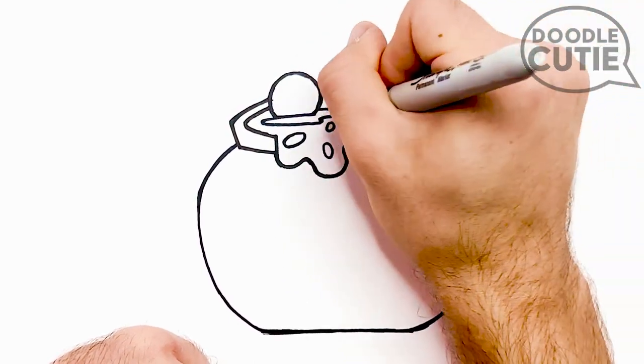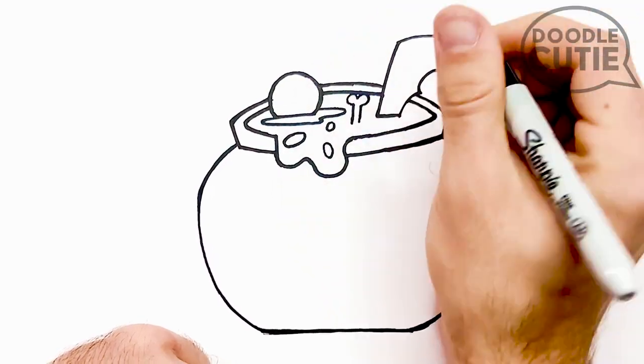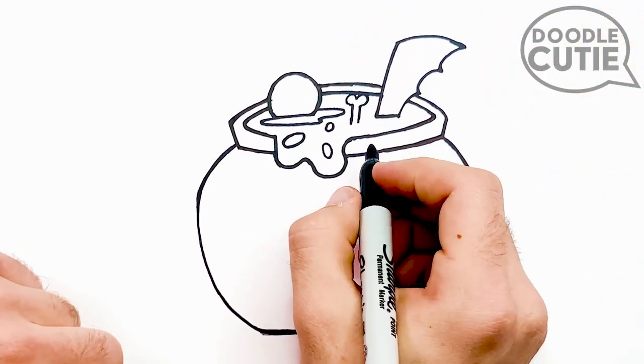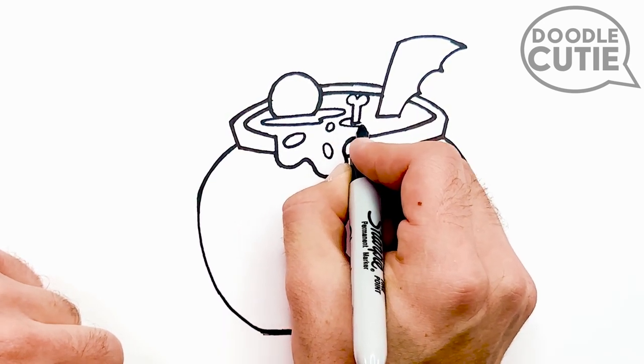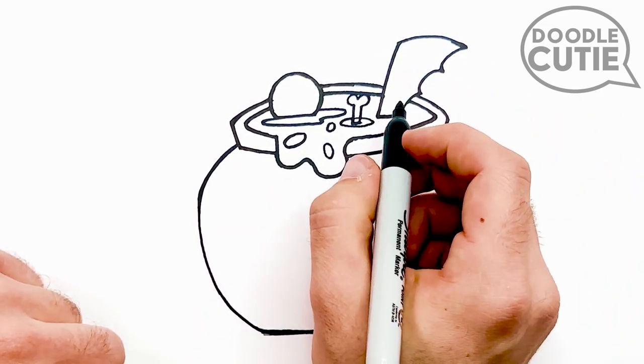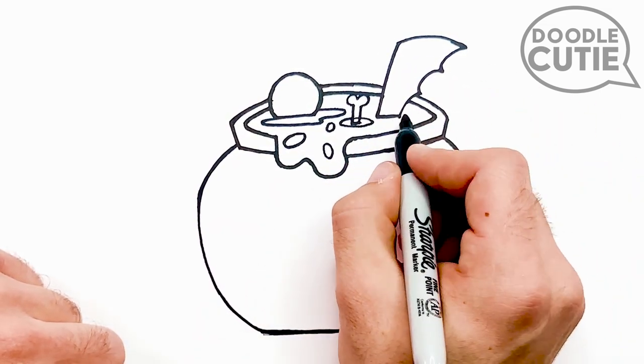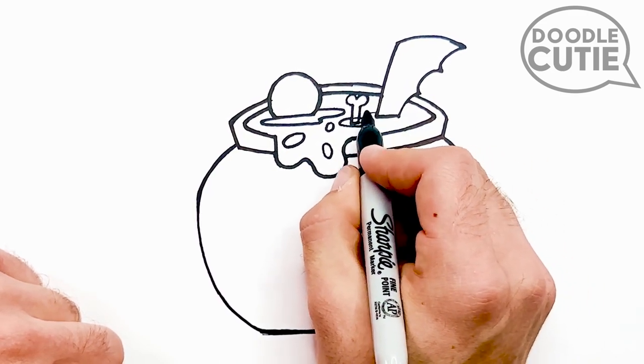Then I'm going to draw a bone in the witch's broth. And then draw a circle shape right under this. Next, another circular shape under the bat wing.